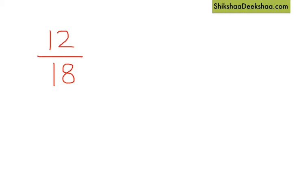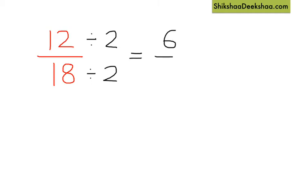Now to obtain equivalent fractions by dividing, we need to choose a number that can divide both numerator and denominator without leaving a remainder. For example, we can divide 12 and 18 both by 2. Two can divide 12 six times and 18 nine times. So we say that 12 by 18 is equivalent to 6 by 9.